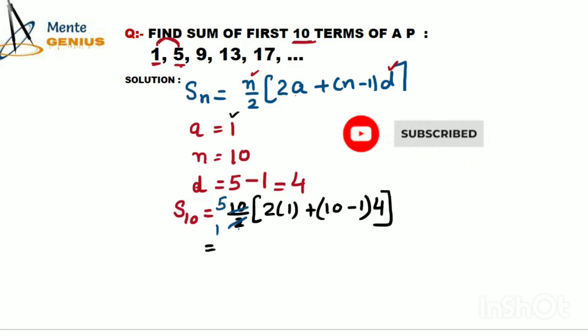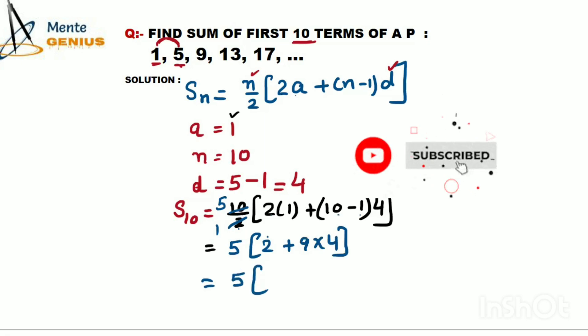So 10/2 = 5. Then 2 + (10-1)×4, which is 2 + 9×4. Now you know the BODMAS rule - don't add 9+2=11 first. First we need to solve multiplication: 9×4=36. So 2+36=38.